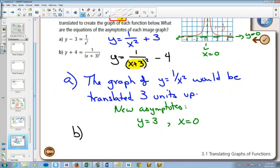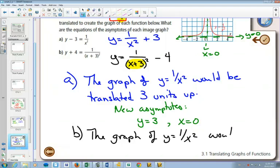So for B, the graph of y equals 1 over x squared would be translated 3 left and 4 down.